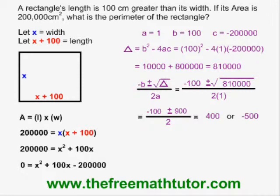Therefore, the width of the rectangle is 400 centimeters. Since the length is 100 centimeters greater, the length must be 500 centimeters. It turns out that the length 500 has the same value but the opposite sign as the negative answer that I threw away, and this will always happen.